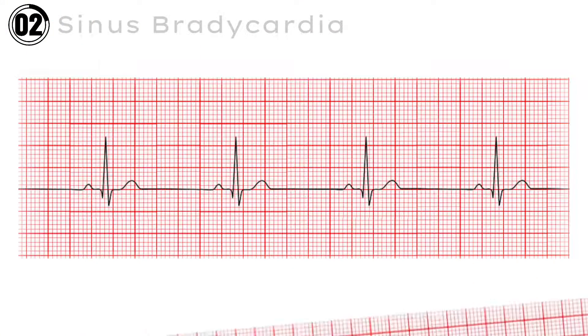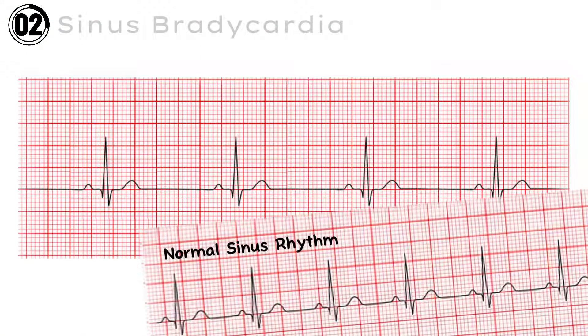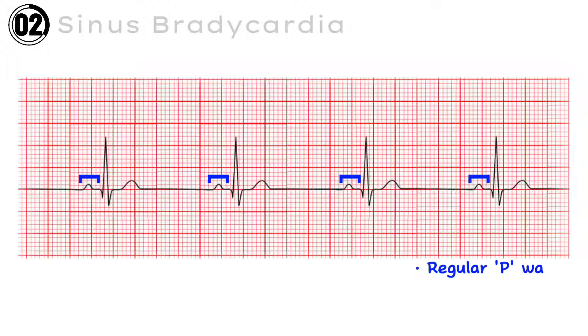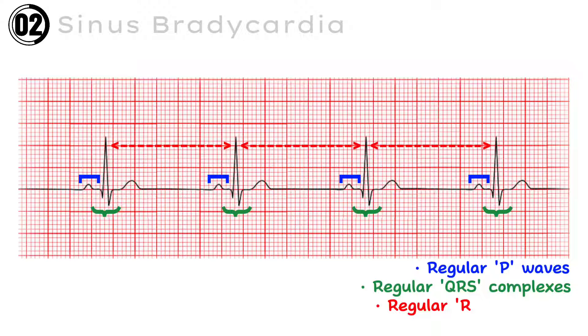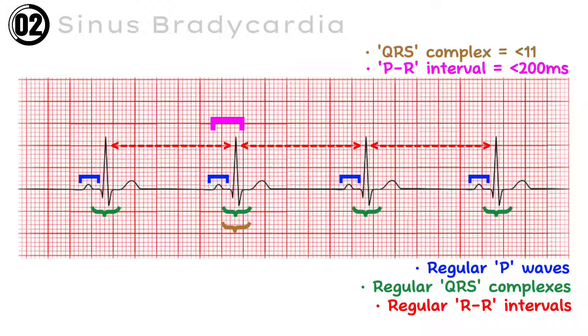ECG number 2: Sinus Bradycardia. Sinus bradycardia follows all the criteria of normal sinus rhythm — like regular P waves, followed by regular QRS complexes, and regular RR intervals — plus the PR intervals and QRS complexes do not exceed the normal length limits. But in sinus bradycardia, the heart rate is below 60 beats per minute, which is the only factor that differentiates it from normal sinus rhythm.